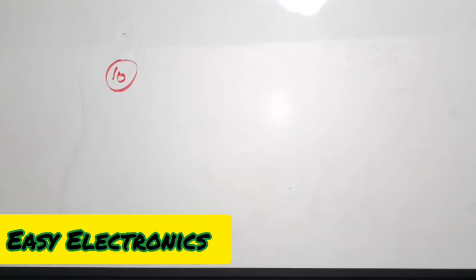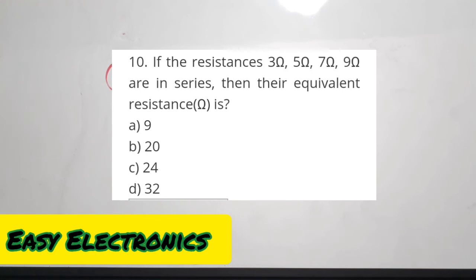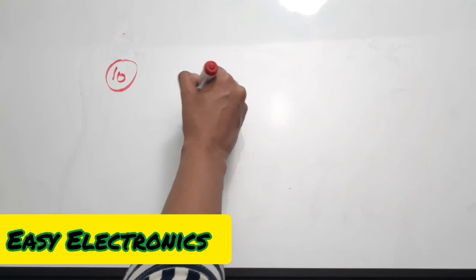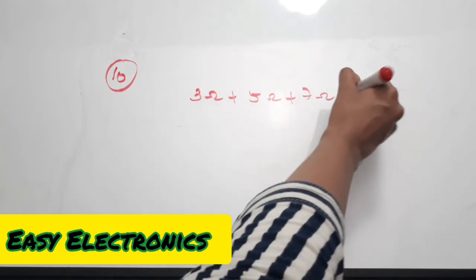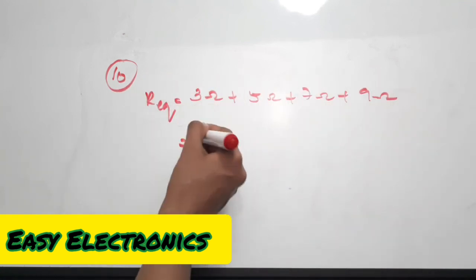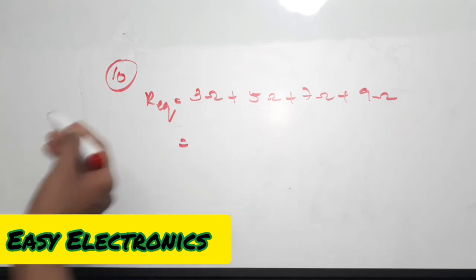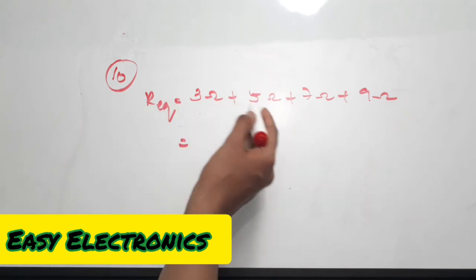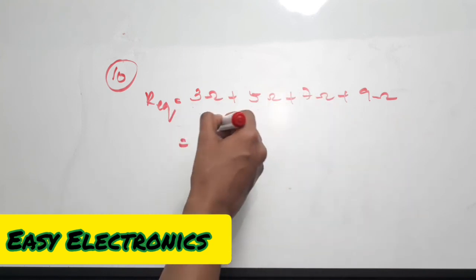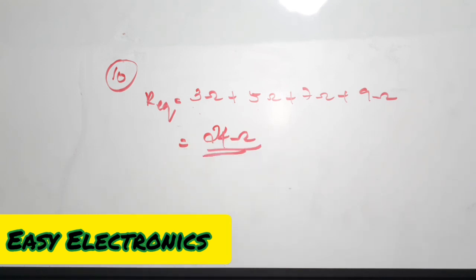The tenth question is from network analysis: if resistances of 3 ohm, 5 ohm, 7 ohm, and 9 ohm are in series, their equivalent resistance in ohms is dash. Since they are in series, there is nothing complicated — just take the sum. If they were in parallel you would use 1 over R_eq equals 1/3 plus 1/5 plus 1/7 plus 1/9, but since they are in series: 3 plus 5 plus 7 plus 9 equals 24 ohms. The correct answer is option C.